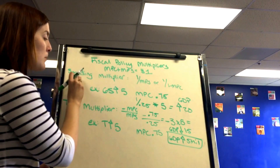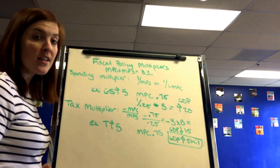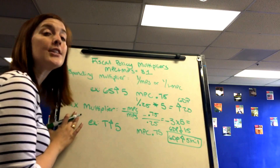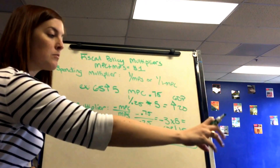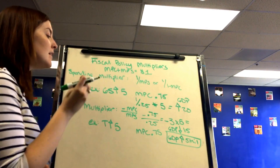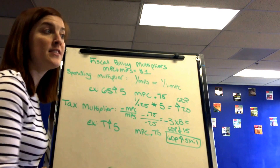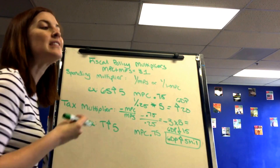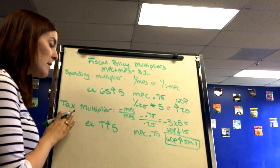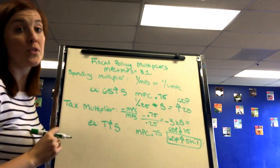Remember, the spending multiplier is always larger than the tax multiplier. The real reason, beyond just the math, is that the tax multiplier has leakages — not all the money taken from income in taxes is used for fiscal policy. Some goes to saving, paying off debts, or imports, which are all leakages out of GDP. So the government isn't using all that money for fiscal policy, making the tax multiplier always smaller.